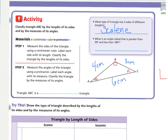Remember that for an obtuse triangle, it only takes one angle to be obtuse. To be considered an acute triangle, all three angles have to be acute. So triangle ABC has two classifications: based on sides it is scalene, and based on angles it is an obtuse triangle.